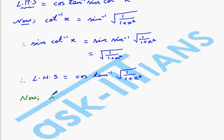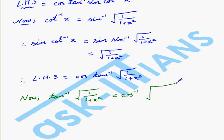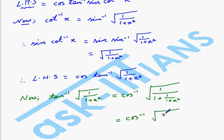Therefore, the left hand side becomes cos(tan⁻¹(√(1/(1+x²)))). Now, tan⁻¹(√(1/(1+x²))) is equal to cos⁻¹(√((x²+1)/(x²+2))).